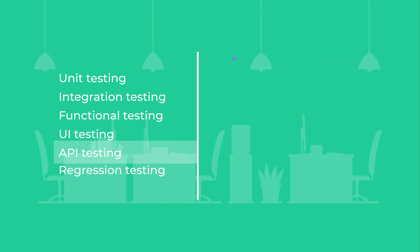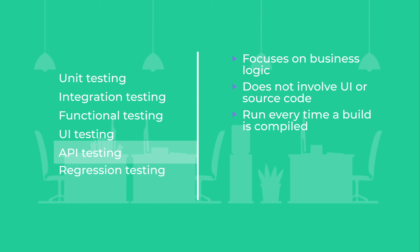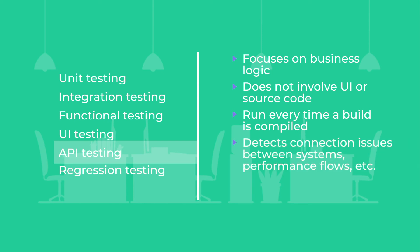API testing deals with the business logic of the software. It does not involve a check of the UI or source code. You can run API tests every time a build is compiled. Automating these test cases allows you to quickly detect connection issues between systems, missing or duplicated functionality, and multi-threading problems. It also helps to determine if there are performance flaws, as the response time between APIs should typically be very high.